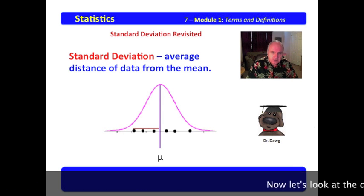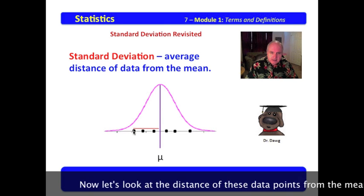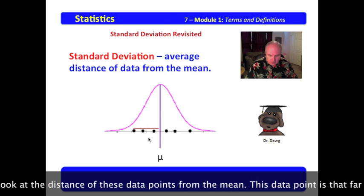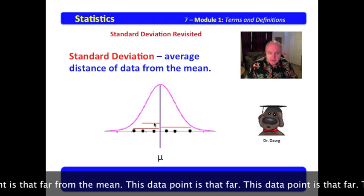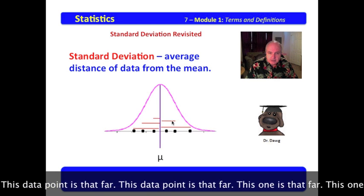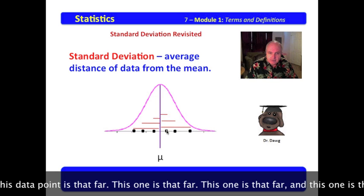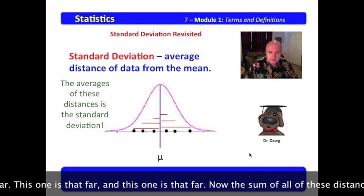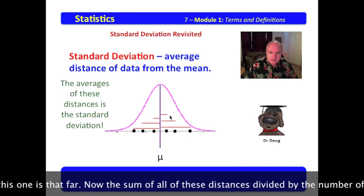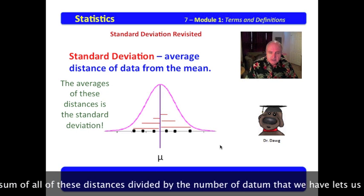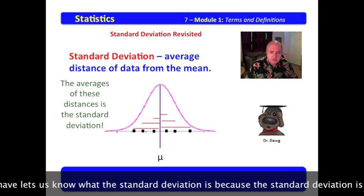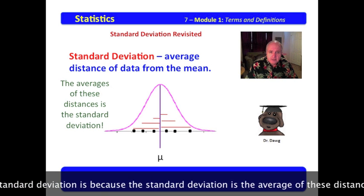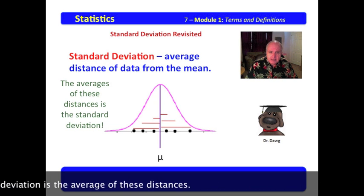Now, let's look at the distance of these data points from the mean. This data point is that far from the mean. This data point is that far. This data point is that far. This one is that far. This one is that far. And this one is that far. Now, the sum of all of these data distances divided by the number of datum that we have lets us know what the standard deviation is, because the standard deviation is the average of these distances.